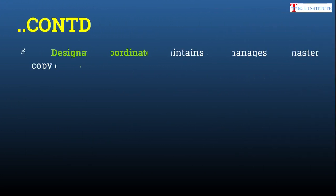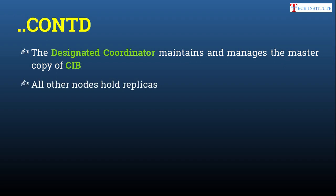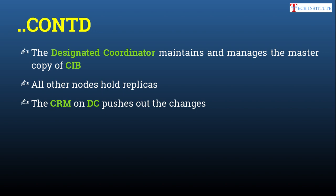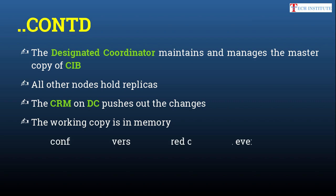Continuing with the CIB: the Designated Coordinator (DC) always maintains the CIB master copy. One node — whoever is the Designated Coordinator — holds the master copy of the CIB, and that copy gets replicated to all other nodes. All nodes hold their own copy of the CIB; it is not stored only on the master or DC node. The CRM on the DC pushes out changes to all other nodes. The working copy stays in memory and there is also a backup copy stored on disk on every node.